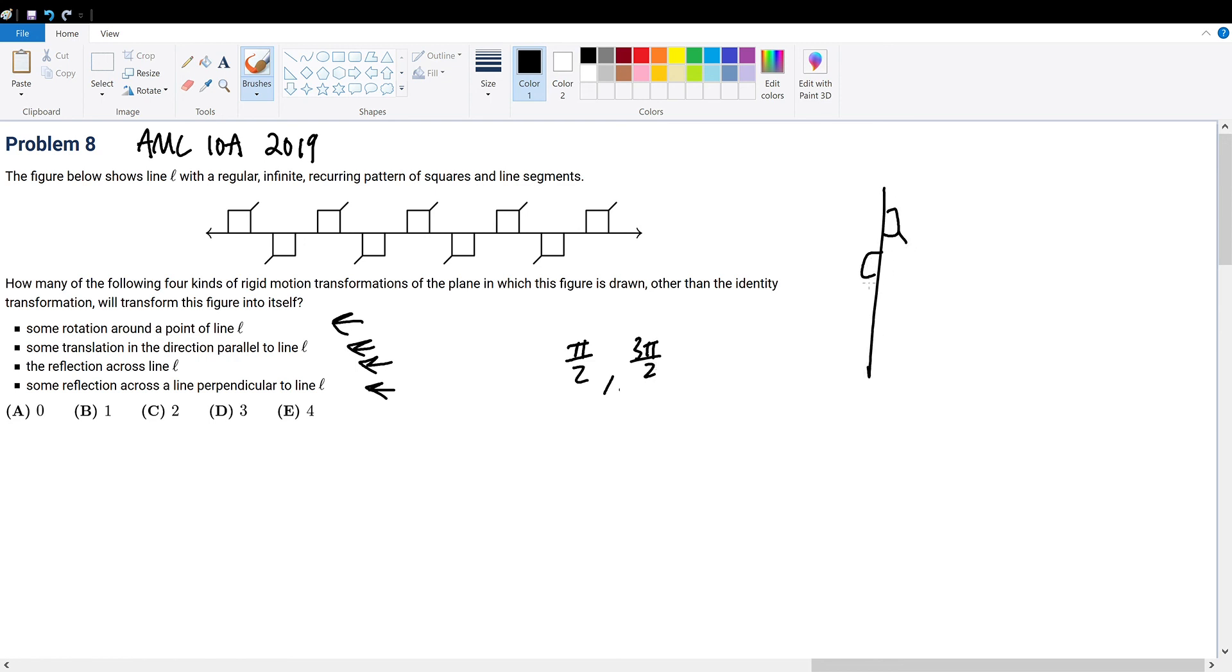We obviously know that we cannot do 90 and 270 degrees because that will make it go vertical, and we do not want it to go vertical. That would obviously not be a transformation that can return it back into the same infinite pattern. So pi over 2 and 3 pi over 2 rotations will not work. We can only consider pi and 2 pi for the rotation.